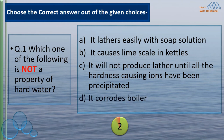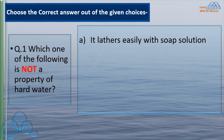Hard water causes lime scale, hard water will not produce lather, and hard water corrodes boiler. So the correct option is A — it lathers easily with soap solution. Hard water does not lather easily with soap solution, so it is not a property of hard water.